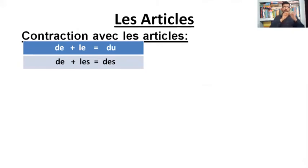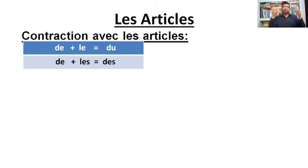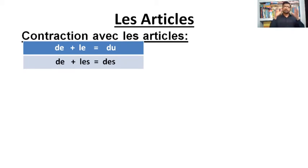You have studied before about the definite article and indefinite article. Here you will see that 'le' is the definite article. You know very well we have three words to say 'the' in French: le, la, les. When your noun is masculine, you use 'le.' When your noun is feminine, you use 'la.' When your noun is in the plural form, you use 'les.' We have also studied about the indefinite articles. And there is another type of article called the partitive article, which we will discuss in the next video.